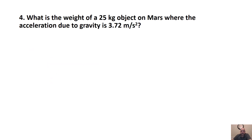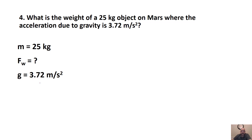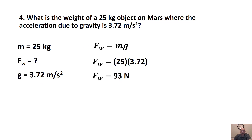What's the weight of a 25-kilogram object on Mars where the acceleration due to gravity is 3.72 meters per second squared? We have a mass of 25 kilograms, but now our weight is going to be different because our acceleration due to gravity is different. Using Fw equals mg: 25 times 3.72 gives us 93 newtons.